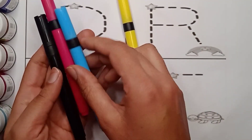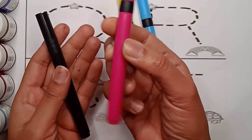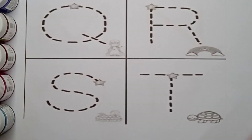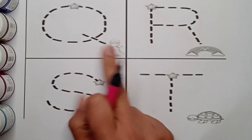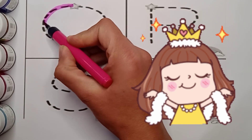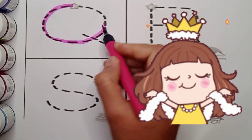Yellow color, blue color, purple color and black color. Let's start writing. Today we will write capital letters Q, R, S, T. Which letter is this? It's Q. Q for Queen, Q for Queen. It's purple color Q.